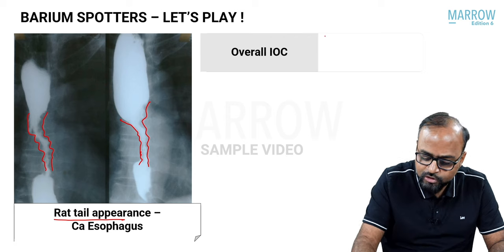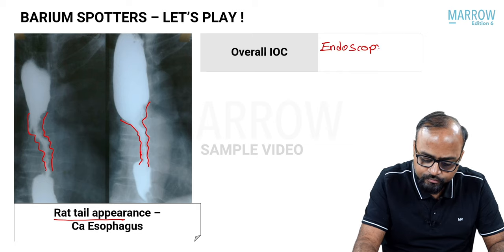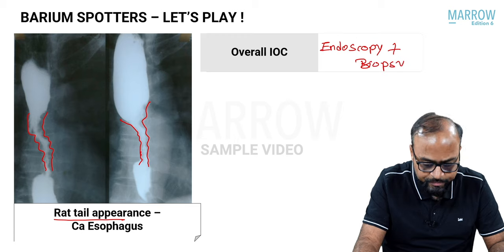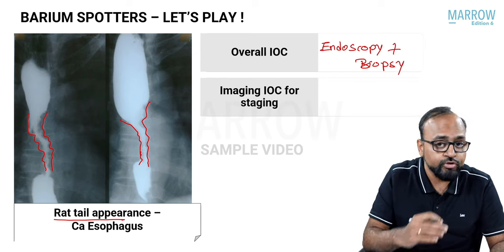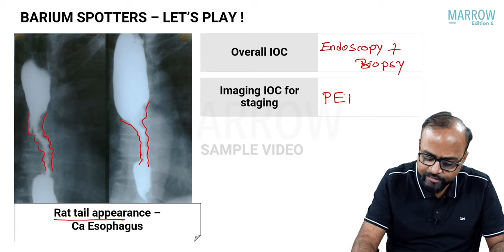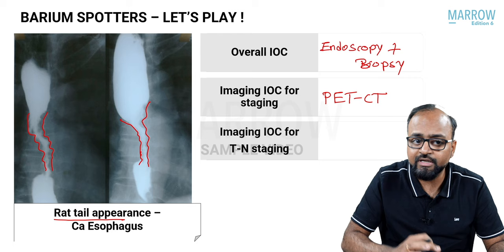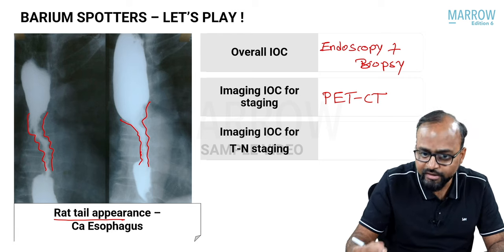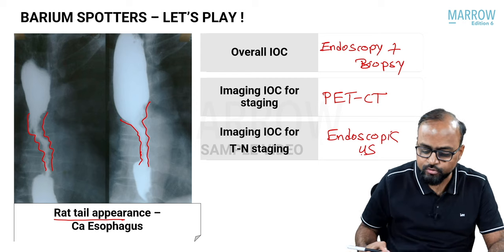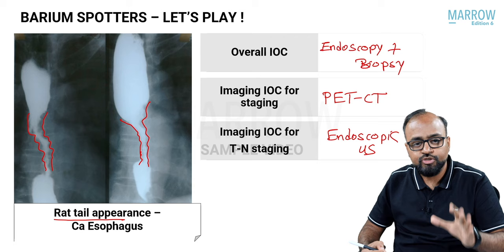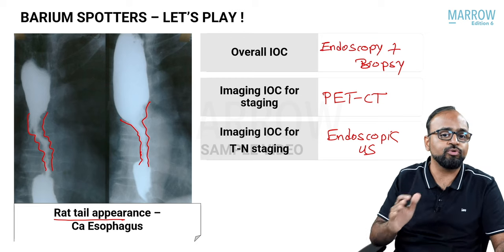For CA esophagus, the overall investigation of choice is endoscopy combined with biopsy, giving a definitive histopathological diagnosis. If they ask specifically for staging, it is PET-CT, as it detects metastases. If they specifically ask for TN staging, the answer is endoscopic ultrasound. So: overall — endoscopy and biopsy; staging — PET-CT; TN staging — endoscopic ultrasound.